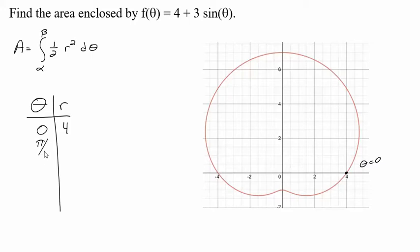If theta is pi over 2, the sine of pi over 2 is 1, so we're going to end up with 7. So that's going to take us up here. So we can see the curve; we could do some values between 0 and pi over 2, but it's kind of mapping out this way here.